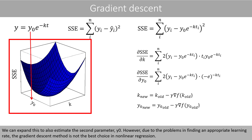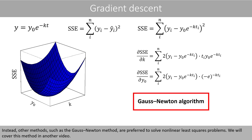We can expand this to also estimate the second parameter y0. However, due to problems in finding an appropriate learning rate, the gradient descent method is not the best choice in nonlinear regression. Instead, other methods such as the Gauss-Newton method are preferred to solve nonlinear least squares problems. We will cover this method in another video.